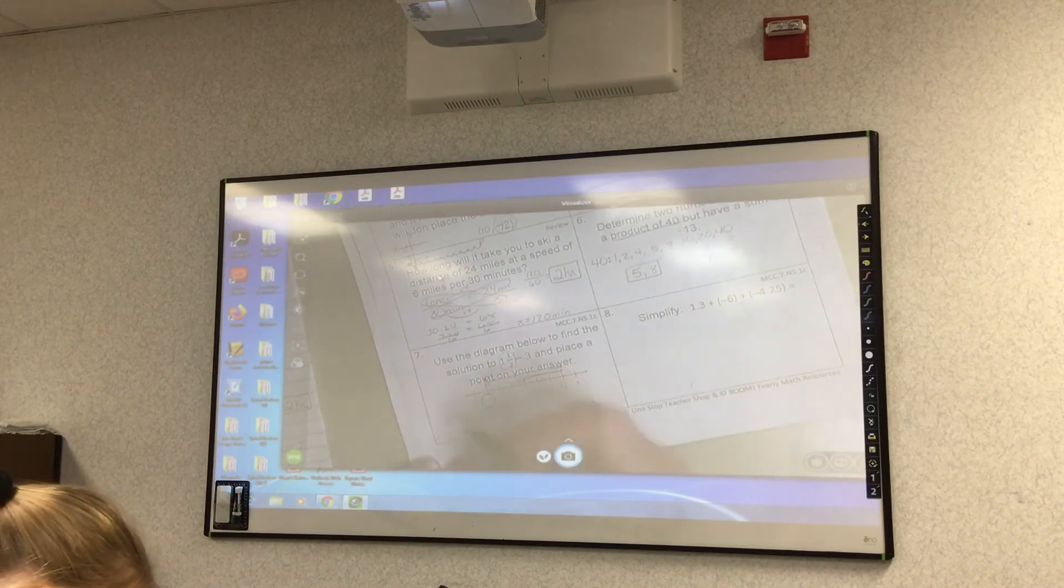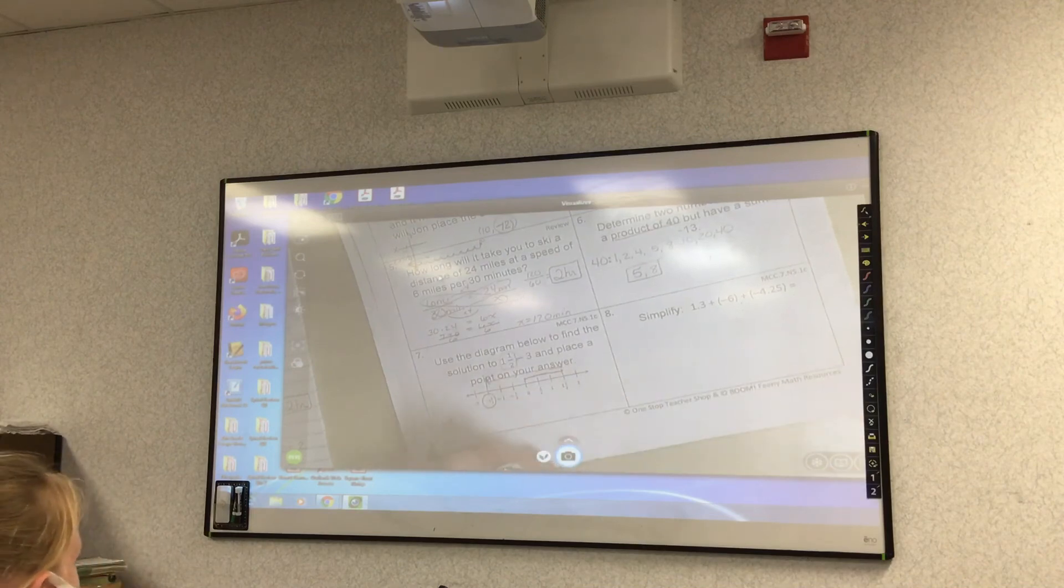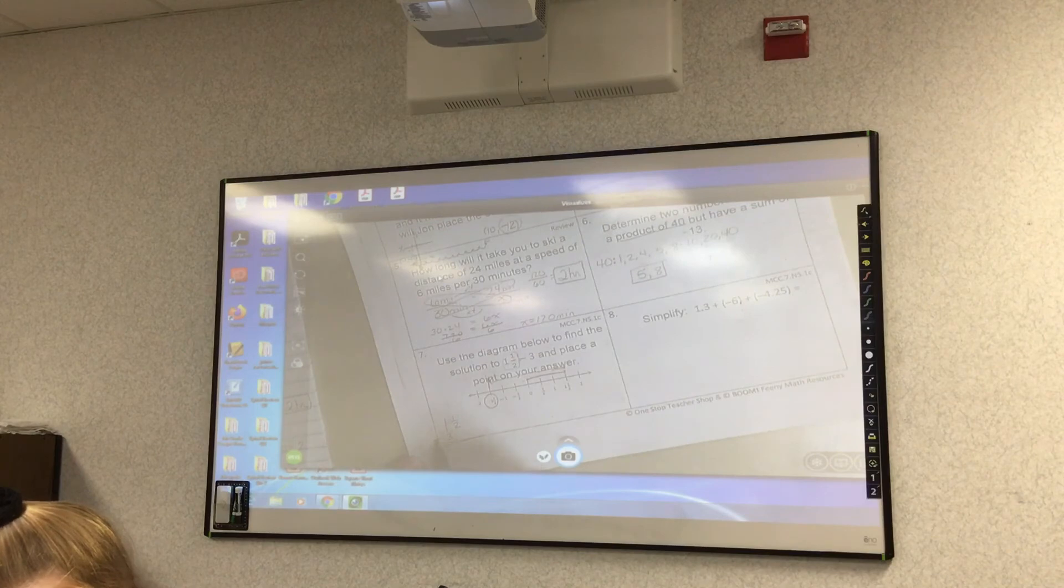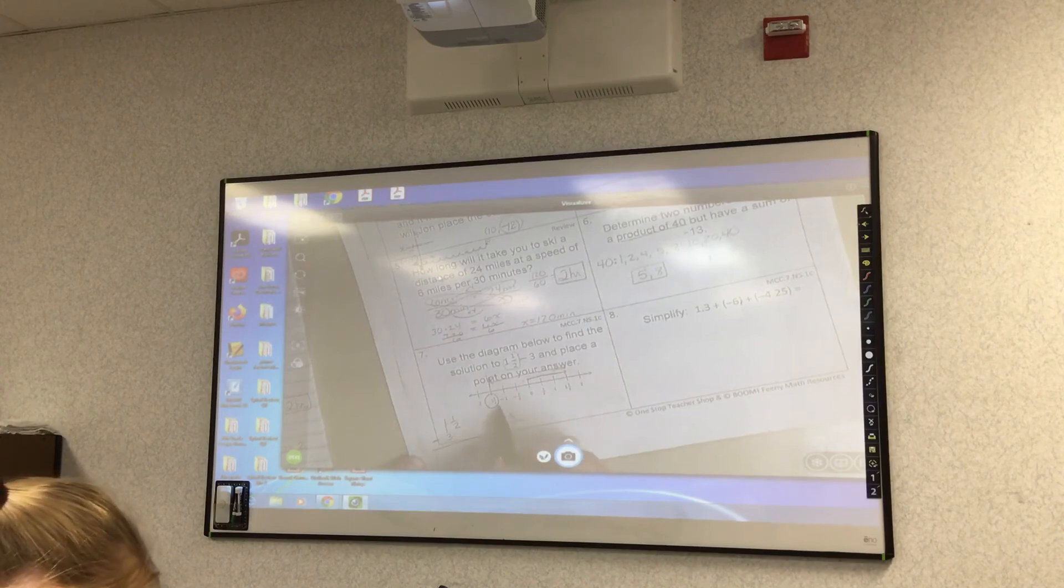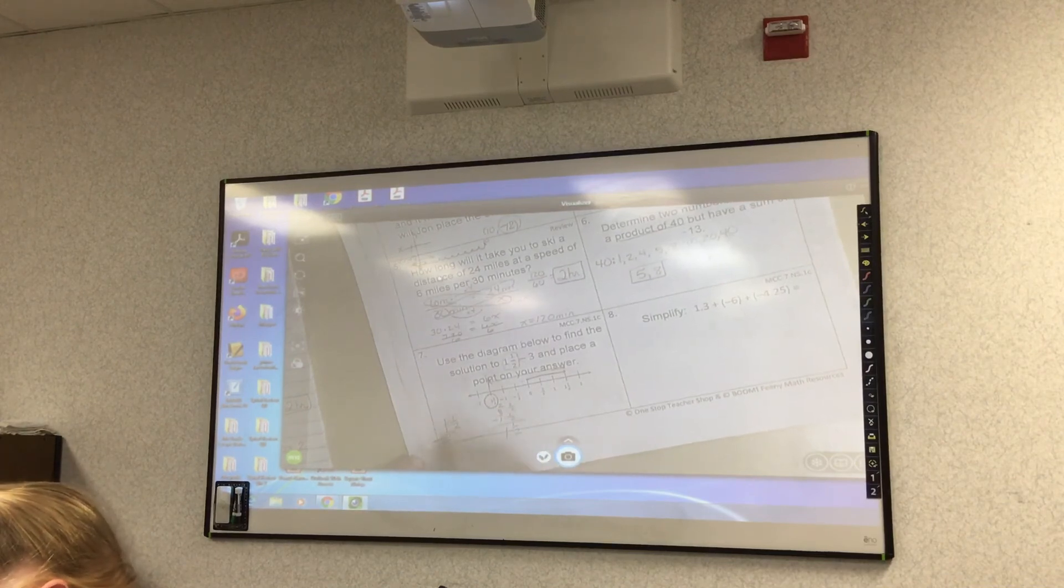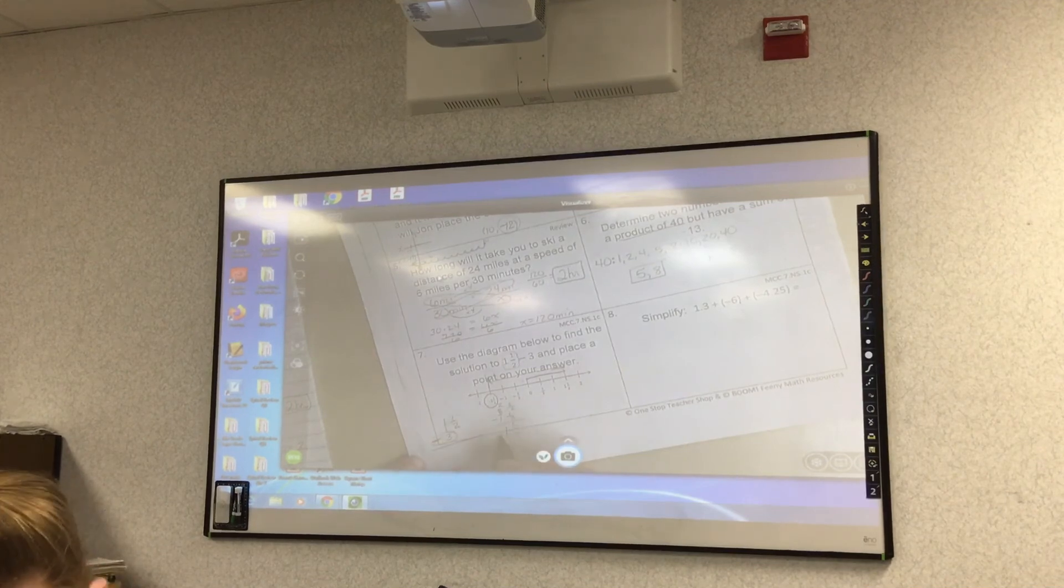I'm going to show it to you also, 1.5 minus 3, without using the number line. I have a positive and a negative. When you have a positive and a negative, you subtract. So I take 3 minus 1 and 1 half. 3 becomes a 2. This becomes 2 halves. 2 minus 1 is 1 half. 2 minus 1 is 1. The 3 was negative. So you take the sign of the bigger number. So then it just becomes negative 1 and 1 half.